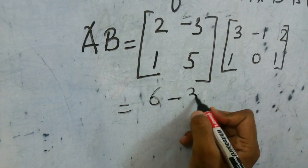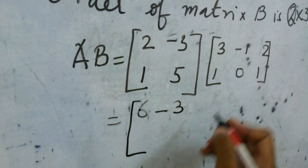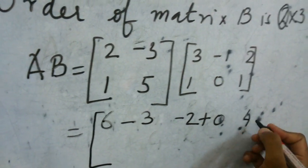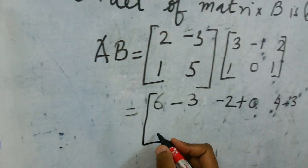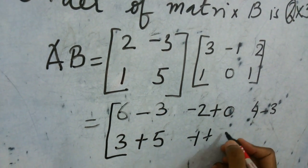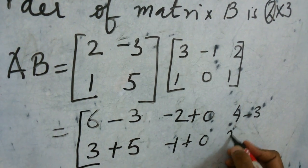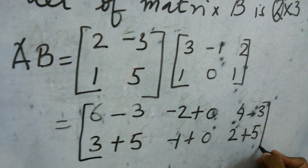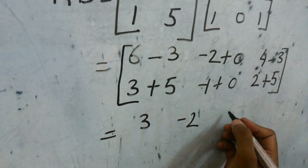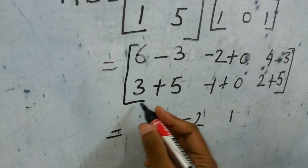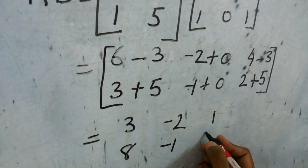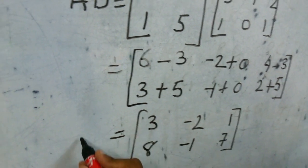Computing the elements: 2×3 = 6, minus 3 gives 3; then 2×(-1) = -2, plus 0 gives -2; then 4 minus 3 gives 1. For the second row: 1×3 = 3, plus 5 gives 8; then 1×(-1) = -1; then 1×2 = 2 plus 5 gives 7. So A into B equals [3, -2, 1; 8, -1, 7].